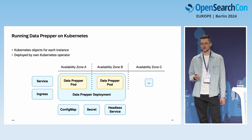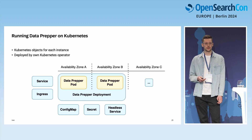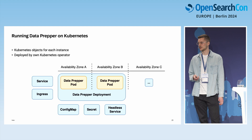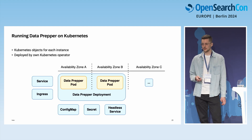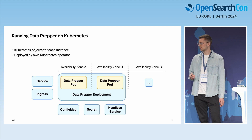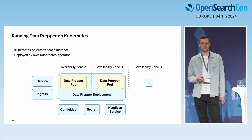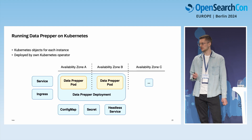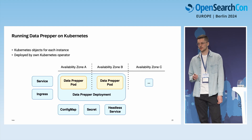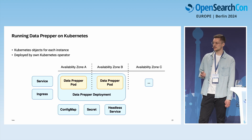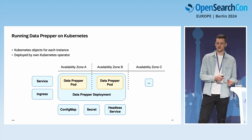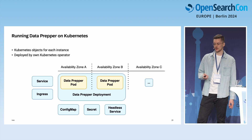We run DataPrepper on Kubernetes as a deployment with two separate pods in two different availability zones, to be highly available and overcome an outage in one zone. We use Service and Ingress for internal routing and exposing DataPrepper with the reverse proxy. We also use ConfigMap and Secret for configuration. There's a Kubernetes headless service required for the peer forwarder component within DataPrepper, because DataPrepper does stateful processing with trace spans — spans from the same trace group must always be processed by the same DataPrepper instance. The headless service enables DNS lookups so DataPrepper can forward trace spans to the right pods.